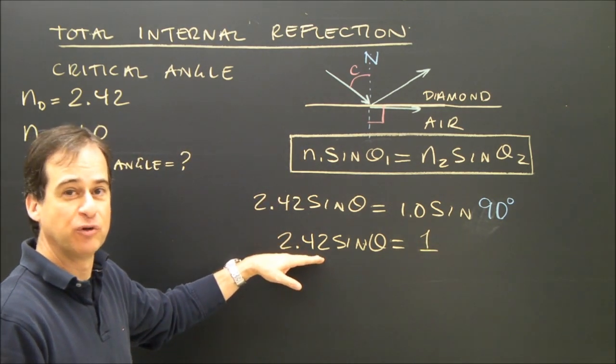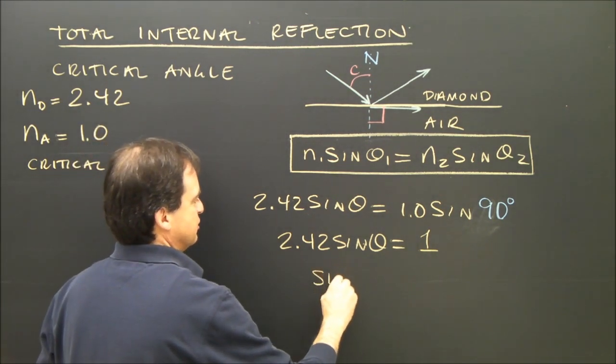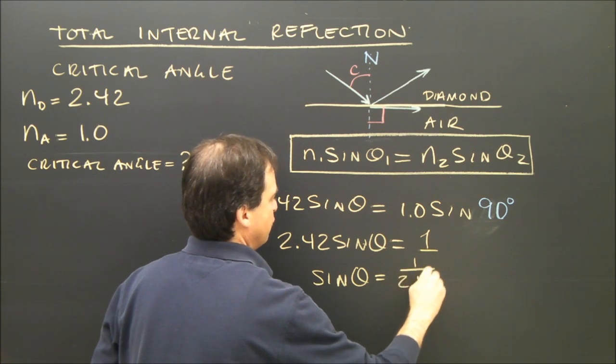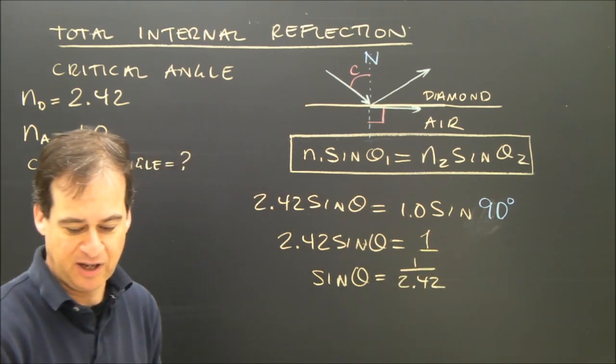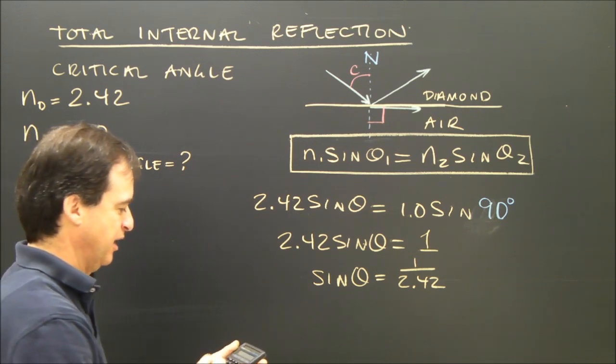I need to get rid of the 2.42, so I divide both sides by 2.42. The sine of the angle I'm looking for is 1 over 2.42. So I take my calculator,